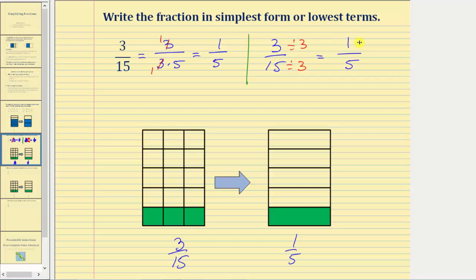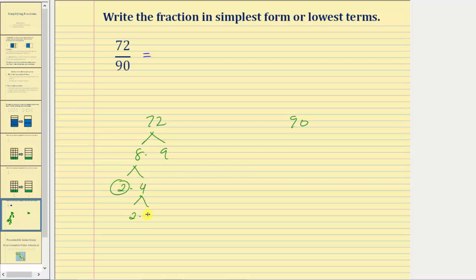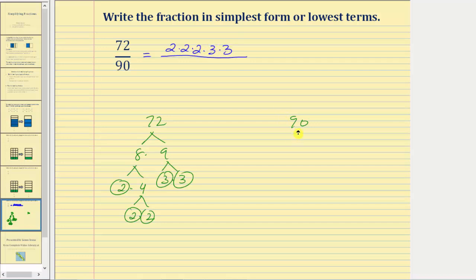Let's look at one more challenging example. We're asked to write seventy-two ninetieths in simplified form. Using the prime factorization method: seventy-two equals eight times nine; eight equals two times two times two, and nine equals three times three — so the prime factorization of seventy-two is two times two times two times three times three. For ninety, we have nine times ten; nine equals three times three, and ten equals two times five — so the prime factorization of ninety, in order, is two times three times three times five.